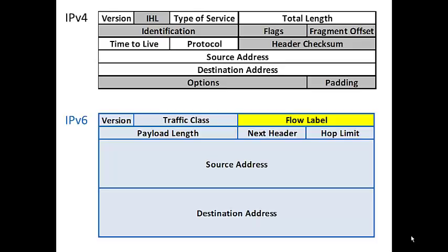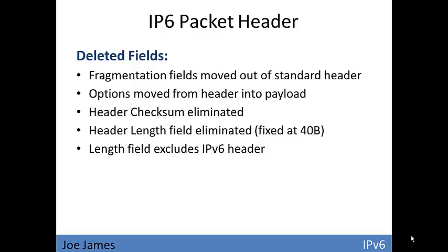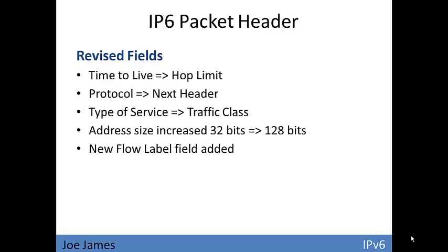IPv6 also has an additional field called the flow label, which is for sequencing packets if they need to be resequenced and reassembled. To summarize the changes: fragmentation fields have been stripped out; options moved into the payload; the header checksum eliminated; the header length field eliminated since it's now fixed at 40 bytes; and the length field excludes the IPv6 header. Revised fields: TTL is now hop limit; protocol is now next header; type of service is now traffic class; and address size increased from 32 to 128 bits for both source and destination.